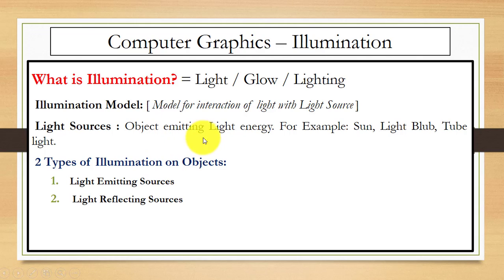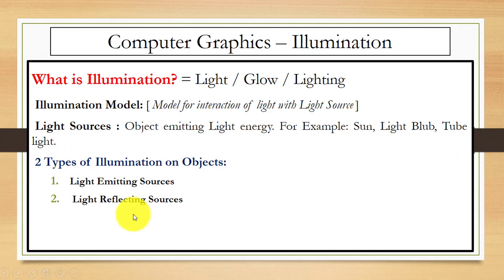An object emitting light energy is called a light source. For example, sunlight, bulb, or tube light. So we have different sources of light: sunlight, bulb, and tube light. Now we have two types of illumination on objects — illumination means light.